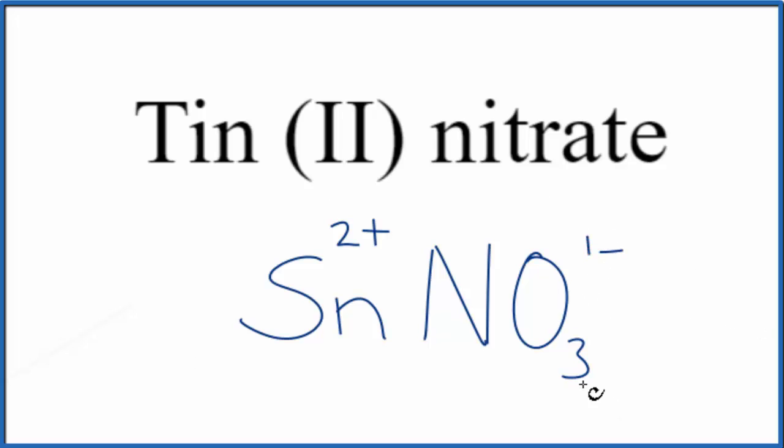So the charges, they need to add up to 0 because Tin (II) nitrate is a neutral compound. It doesn't say ion after it. So to do that we could use the crisscross method. We could take the 1, put it here, we don't write the 1 by convention though, and put the 2 over here.